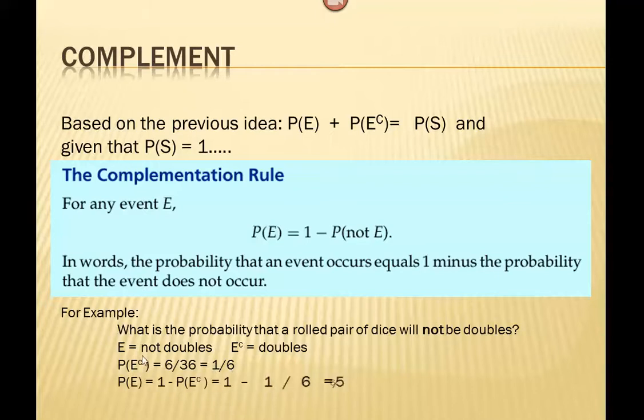And so therefore, the probability we won't get doubles is going to be 1 minus that, 1 minus 1/6, or 5/6. Again, we could turn that into a decimal or a percentage if we so desired.